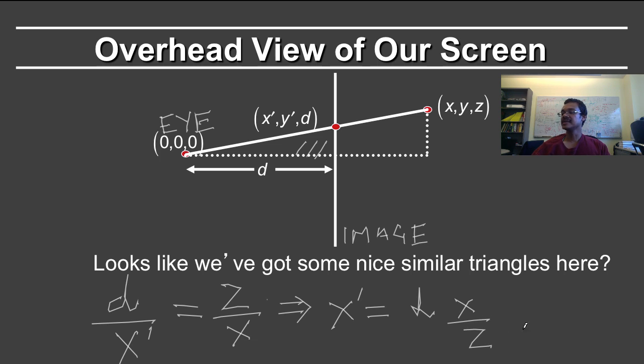This division by z is really critical. That is what ensures that the object gets smaller the further away it is from the screen. And of course, we cannot divide by z using standard matrices.